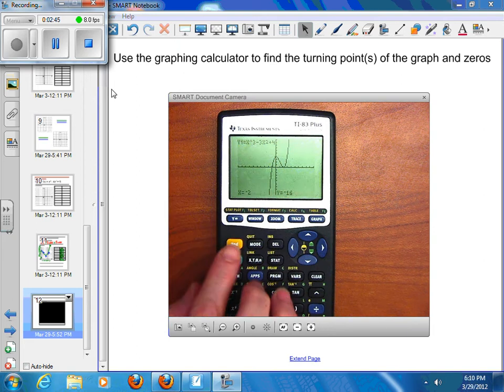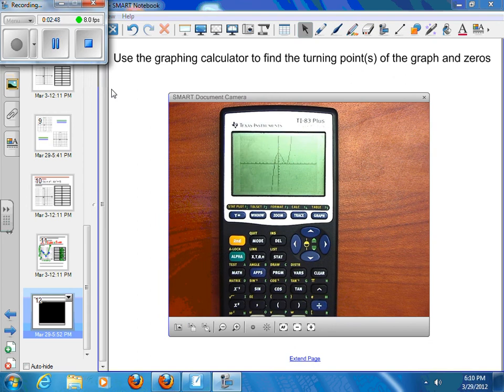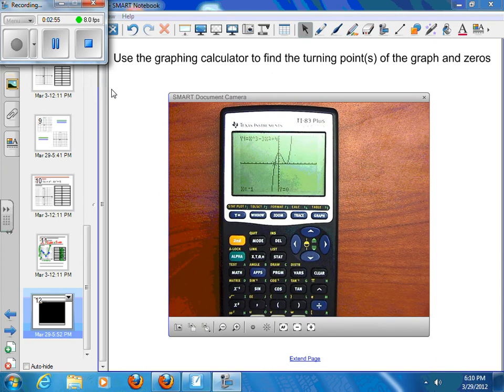And then I can do that again. So second and calculate and value. And say I put in a negative 1. Whenever I press enter, it tells me that that value is going to be 0. And then you can see the flashing cursor is right there, and in fact, at negative 1 and y is 0.